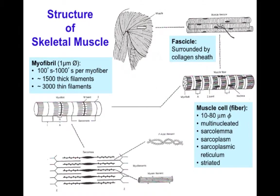The repeating unit along the length of a myofibril that gives rise to the striation period is called the sarcomere. The sarcomere is an organized structure of overlapping thick and thin filaments. The thick filaments are myosin and the thin filaments are actin. There are other proteins not shown in textbook diagrams that hold everything together.